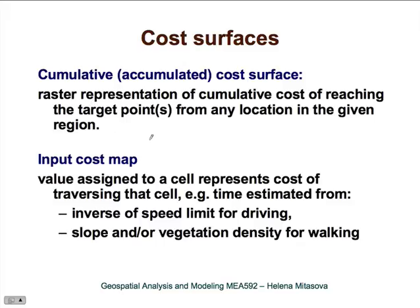To define a cost surface, we need to define an input cost map. An input cost map can be uniform — just a single value — but it can be spatially variable. For example, we can define cost as a time estimated from the inverse speed limit for driving, or based on time to traverse a cell based on slope or vegetation density if we are talking about walking.